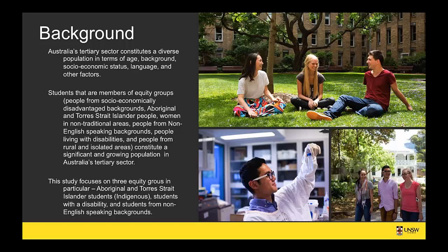This study focuses on three equity groups out of those six: Aboriginal and Torres Strait Islander students, also known as Indigenous students; students who are living with a disability or disabilities; and students who are from non-English speaking backgrounds but are domestic students — that is, all students from non-English speaking backgrounds who aren't international students.